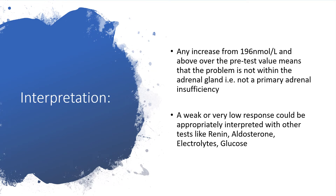Interpretation: any increase of 196 nanomoles per litre or above over the pre-test value means the problem is not within the adrenal gland — in other words, it is not a primary adrenal insufficiency. But if we have a weak or very low response, that should be interpreted alongside other tests such as renin, aldosterone, electrolytes, and glucose.